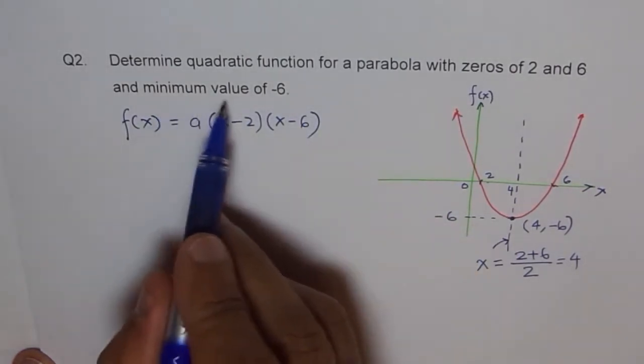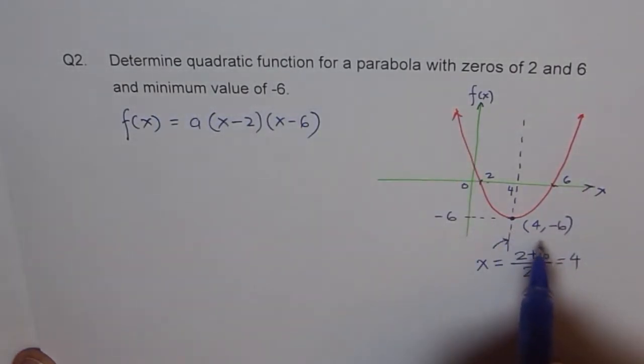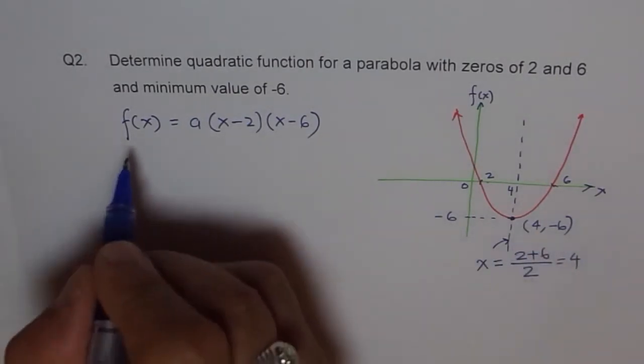Now, minimum, it opens upwards, it has a minimum, and we just found out the minimum is at x equals 4, and the y value is given as minus 6. We'll plug in these values. So f(x) is minus 6 here, and a, and x value is 4.